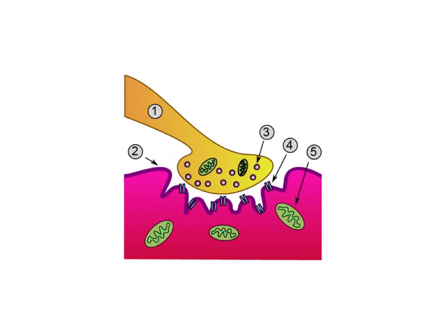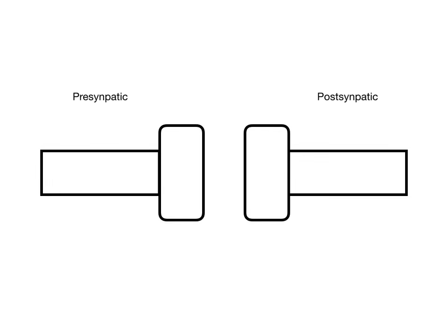When you look at this diagram, the things we're going to be focusing on today are labeled as 3 and 4. 3 is acetylcholine, and 4 is the nicotinic acetylcholine receptor. Under normal circumstances, acetylcholine will flow out of the presynaptic nerve terminal and bind to its receptor on the postsynaptic membrane. The presynaptic nerve terminal and the postsynaptic membrane — this is the neuromuscular junction. The acetylcholine, shown as red circles, will leave the presynaptic nerve terminal and bind to its nicotinic acetylcholine receptor on the postsynaptic membrane, shown here as red diamonds. This is what happens normally.